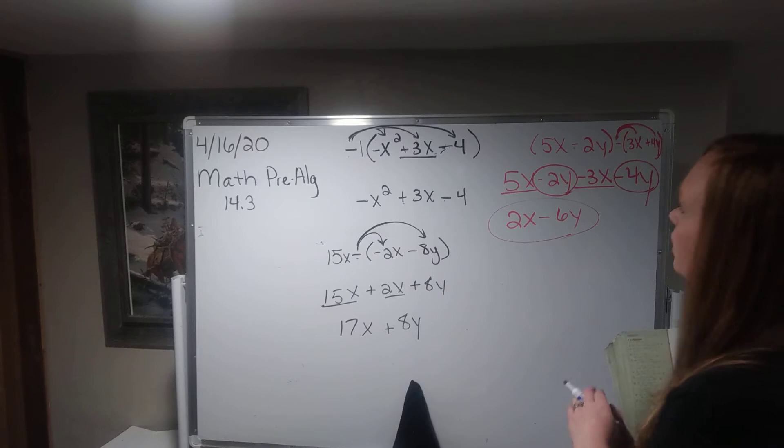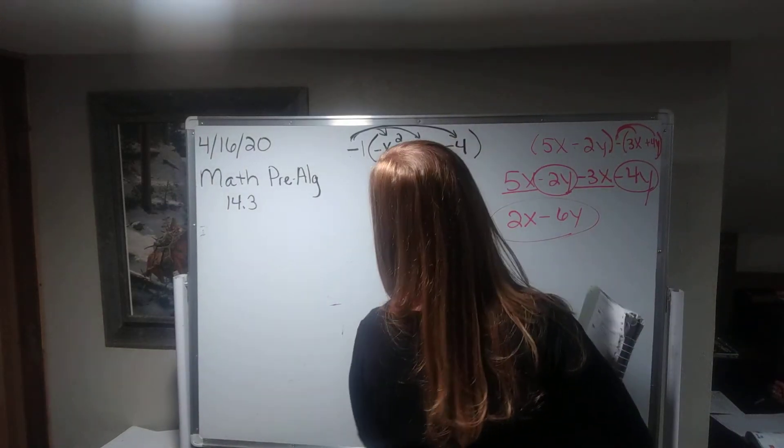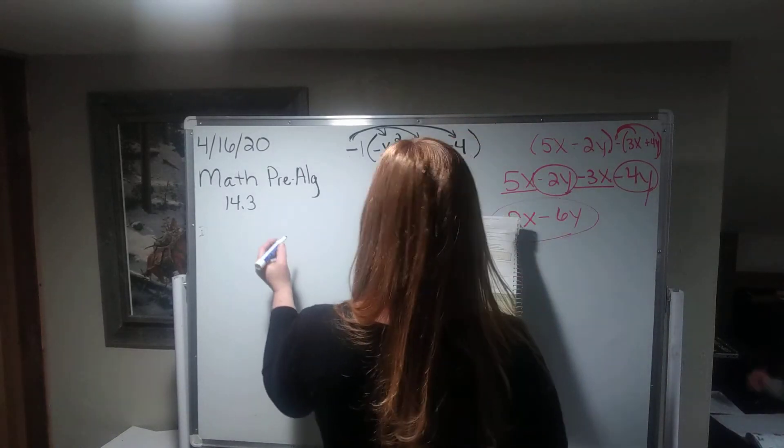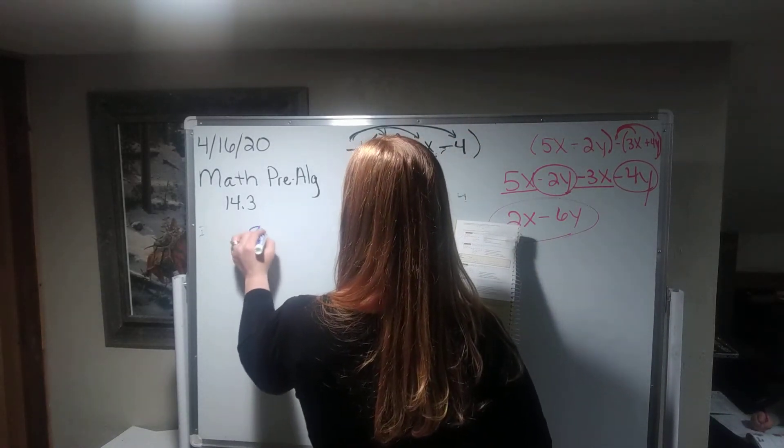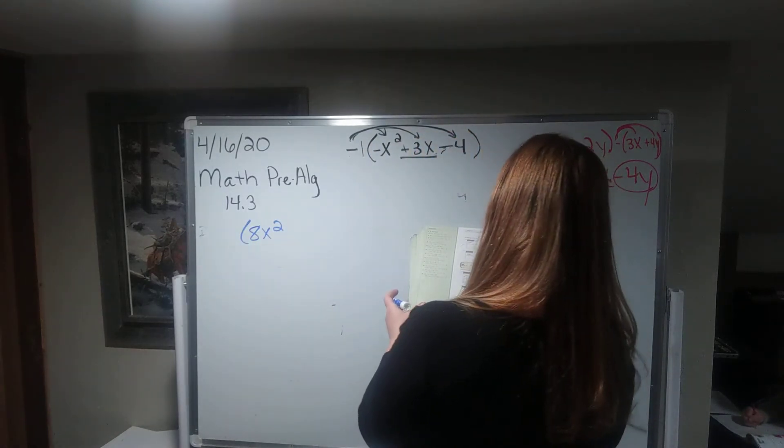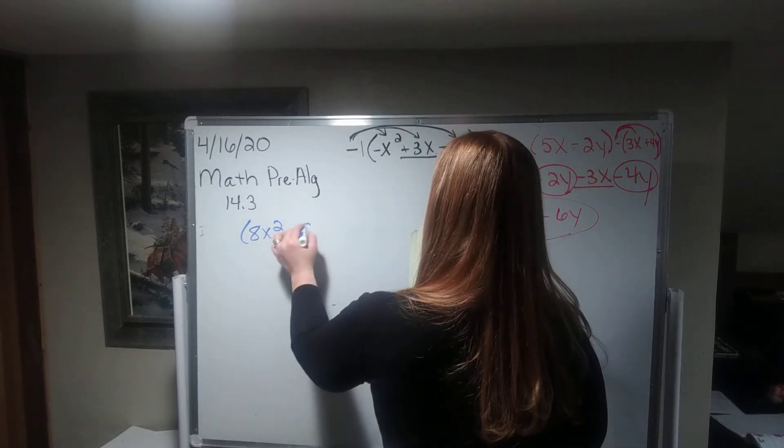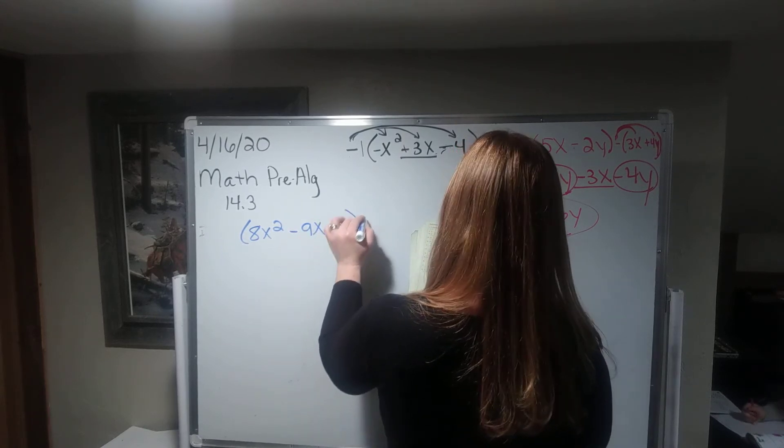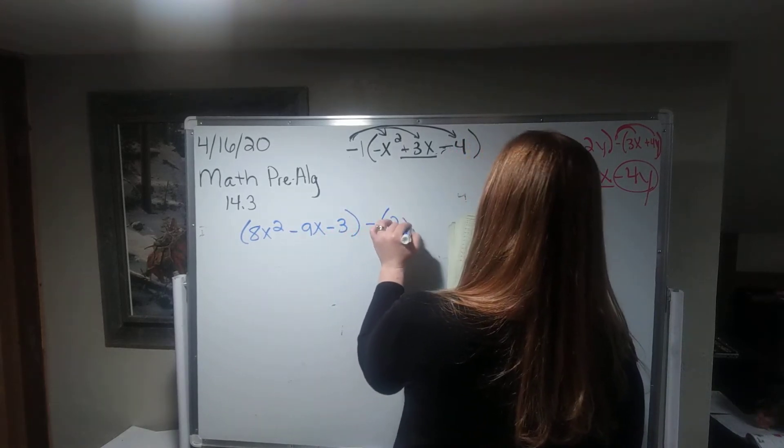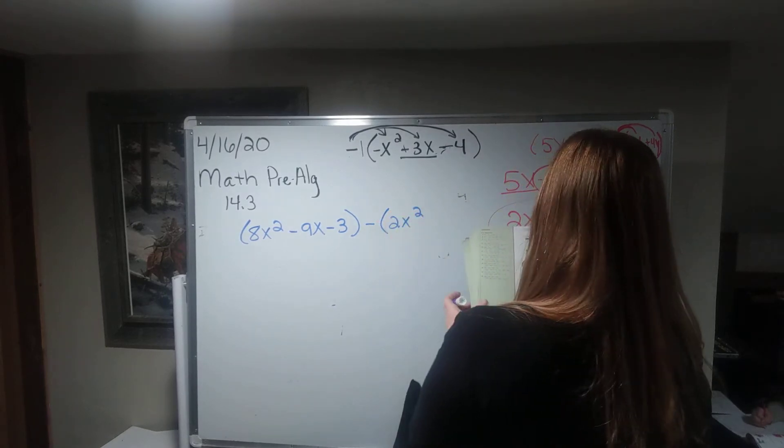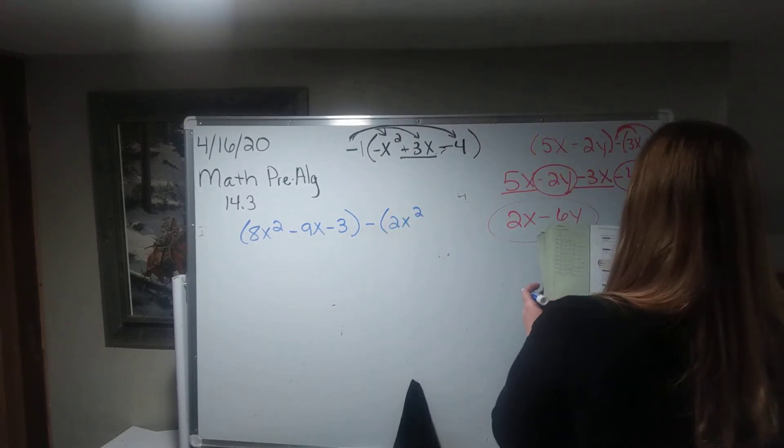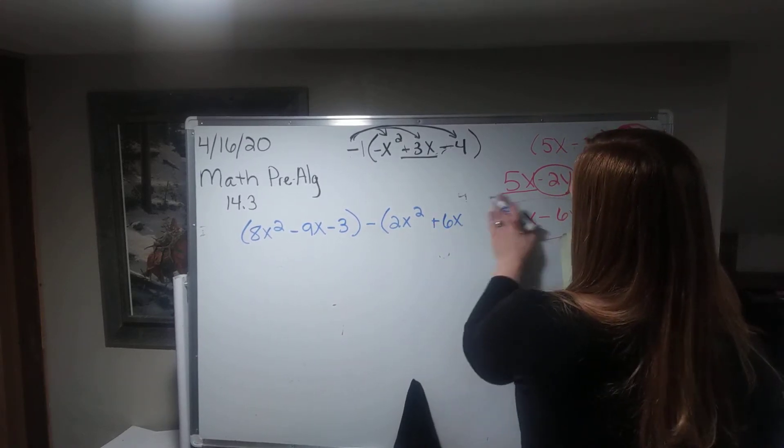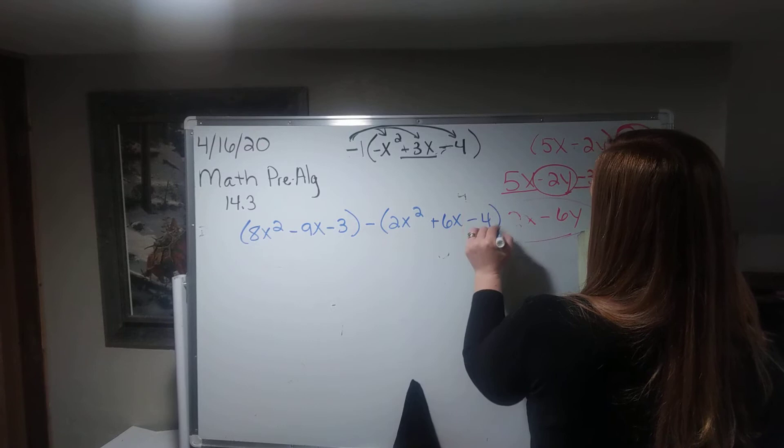Okay. Example 4. I'm going to go ahead and erase. I just have plenty of room to do this one. Example 4. 8x squared minus 9x minus 3 minus 2x squared plus 6x minus 4.